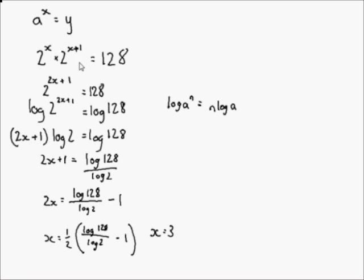And the beauty of these questions is you can always check if you are right. 2 to the power of 2 times 3 plus 1, 2 to the power of 7 is 128. 2 to the power of 3 times 2 to the power of 4, and you get 128, so this one's correct. Now you're also likely to be given an exponential equation with an inequality.